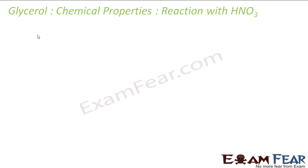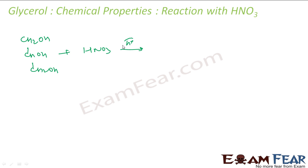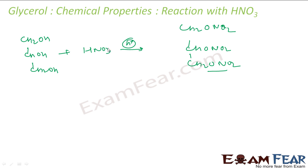Reaction with HNO₃: glycerol (CH₂OH, CHOH, CH₂OH) reacts with concentrated HNO₃ in the presence of H₂SO₄, which generates NO₂⁺ ions. The nitro groups replace the hydrogen atoms of the OH groups. This is a nitration reaction producing glycerol trinitrate (nitroglycerin).